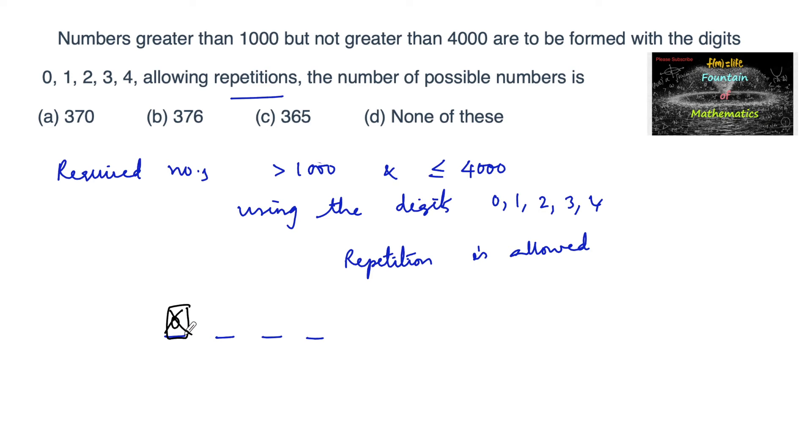0 is not accepted, and even 4 with other numbers (other than 4000) is also not accepted. Let us exclude these two digits, 0 and 4. Then the remaining possibilities for the first place are 1, 2, 3—out of 5 digits, only 3 possibilities are there.